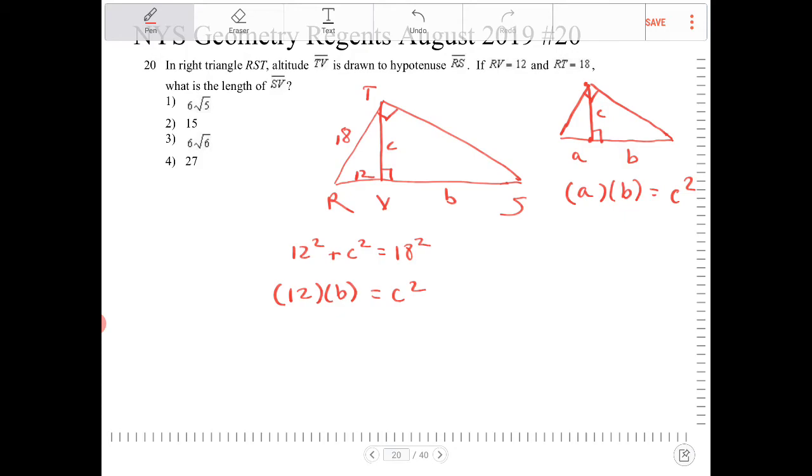In the second equation I wrote there, there are two unknowns. I can isolate C squared in the top equation, so that I can eliminate that into the second equation. So, 18 squared minus 12 squared is going to equal to C squared.